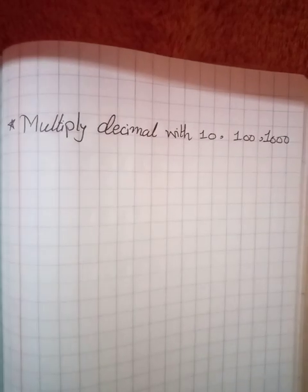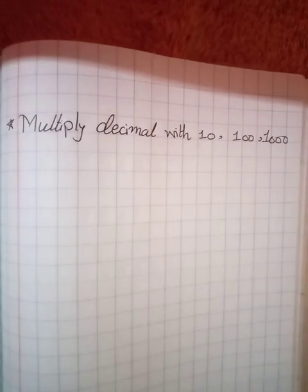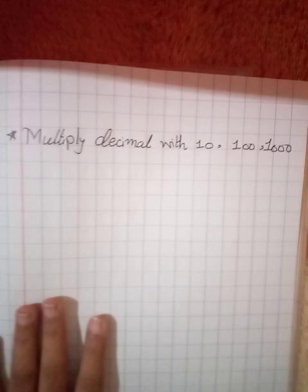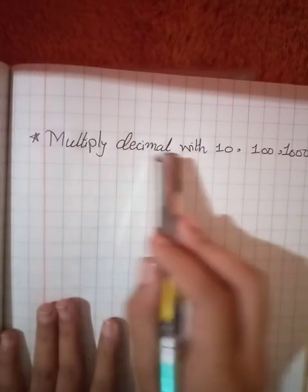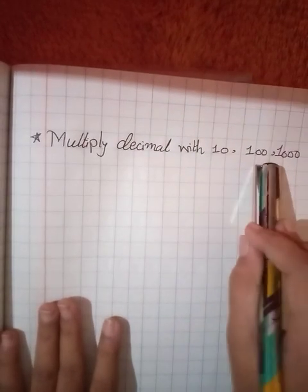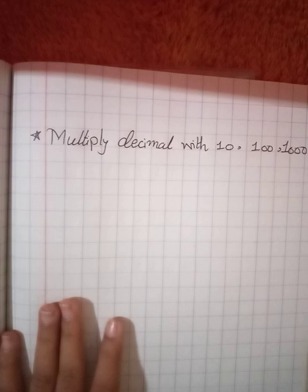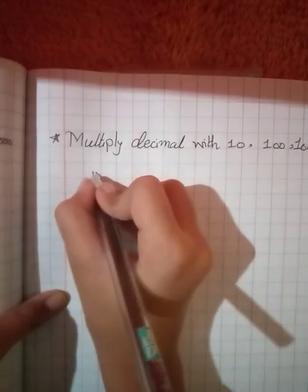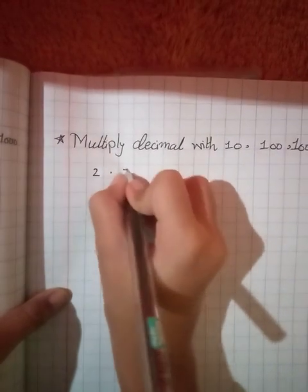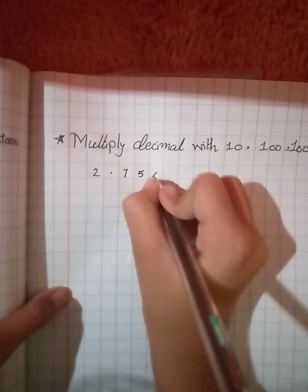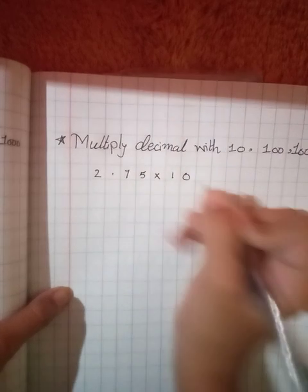Hello guys, welcome back to my channel. In this video I am going to tell you how to multiply decimals. Today's topic is multiplying decimals with 10, 100, and 1000. So our first equation is 2.75 multiplied by 10.